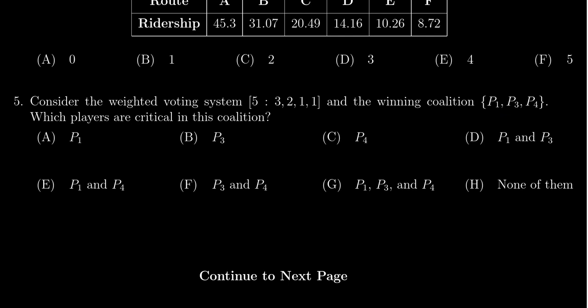So let's look at the vote count for this set here. So player one has three votes, player three has one vote, and so does player four, which gives you a total of five. Five is the quota. If we lose even one vote, this coalition will become losing.